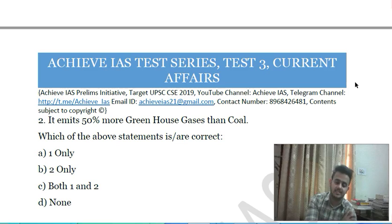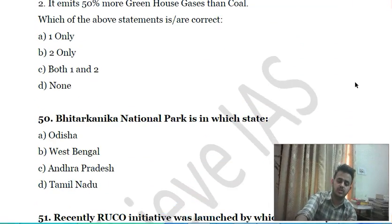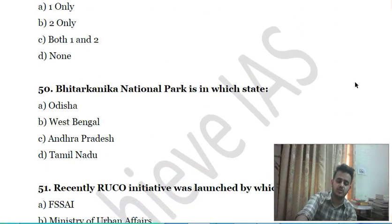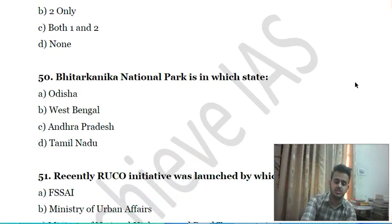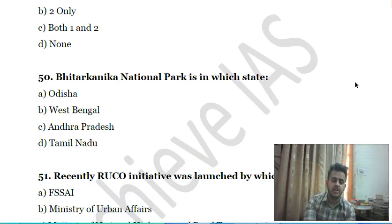Forty-eighth question: consider the following statements about petcoke — first, India is the world's largest consumer of it; second, it emits 50 percent more greenhouse gases than coal. Choose the correct answer.